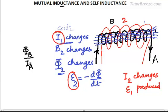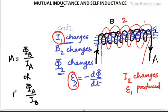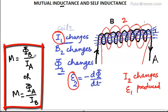Now mutual inductance M is defined as φ_B / I_A, which means the flux in circuit B due to the current in circuit A, or we can say φ_A / I_B. Both of these define M, the mutual inductance, and you will see that they have the same values — whether we take current in 1 and flux in 2, or current in 2 and flux in 1, the value comes out to be the same. I guess that is why it is called mutual.